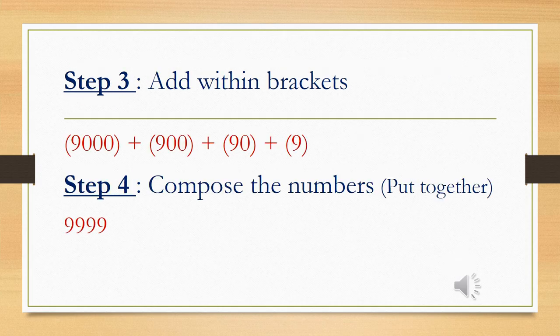Okay learners, now that we have grouped our numbers according to their place values, we put the thousands together, the hundreds together, the tens together, and the units together, now we can move on to step 3, which is add within brackets. Let us remember that our operation is addition. If we have to do subtraction, we would have to subtract within the brackets. But let's get back to adding.